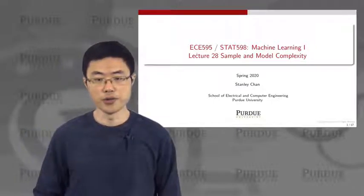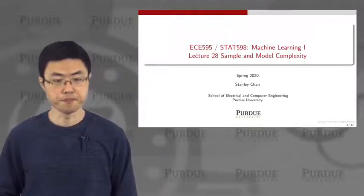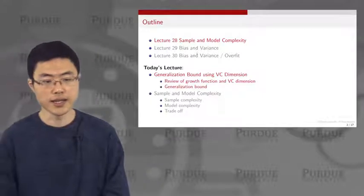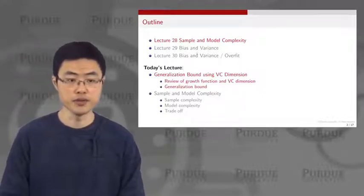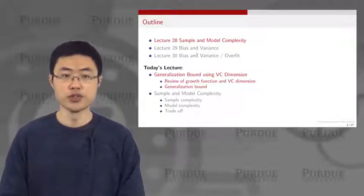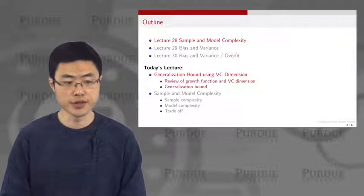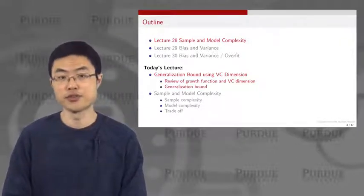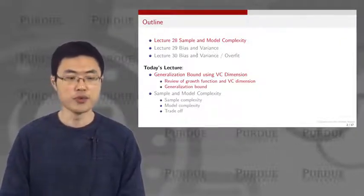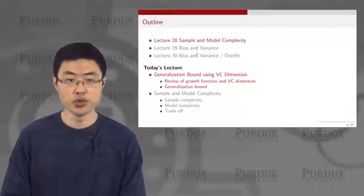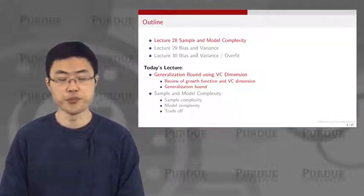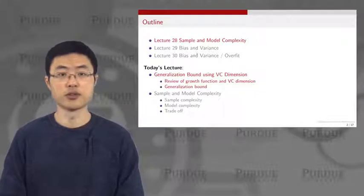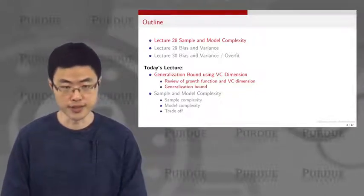Welcome to lecture 28 on sample and model complexity. Today we are going to look at the second half of the story on VC dimension. We want to use the VC dimension from the last lecture to help us understand the generalization bound, and then we want to introduce the notion of sample complexity and model complexity, and discuss the trade-off between these two complexities.